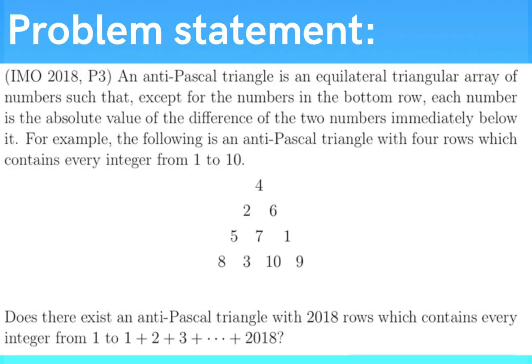But before we try to solve it, let's read the problem statement. An antipascal triangle is an equilateral triangular array of numbers such that, except for the numbers in the bottom row, each number is the absolute value of the difference of the two numbers immediately below it.